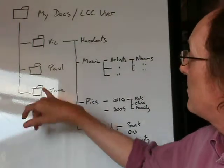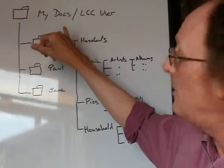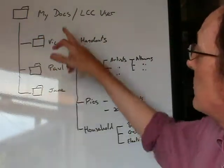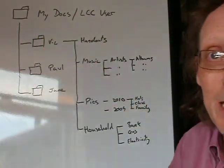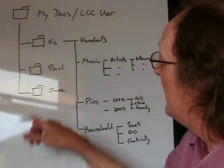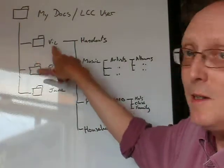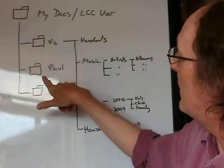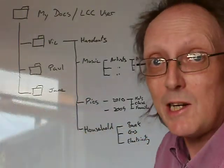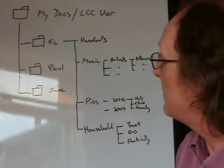For instance, you might be at a centre that has a registered LCC user, or you might have a My Documents folder on your computer at home. You can organise by person — say, if you've got people in the household like Vic, Paul, Jane, they could each have a directory area so they could keep all their files in one place.